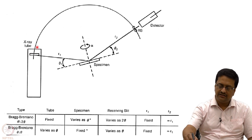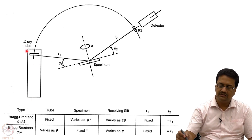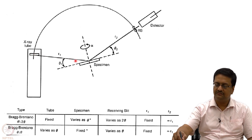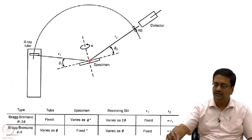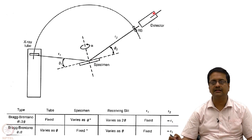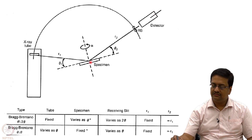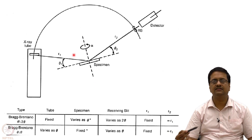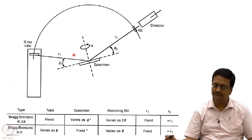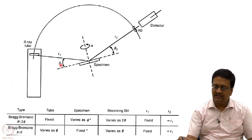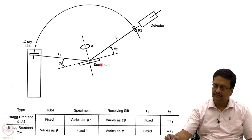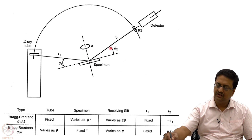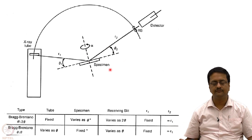This schematic diagram shows the diffraction experiment. The X-ray tube is mounted vertically and the beam comes from left to right, hitting the specimen holder. The specimen can be rotated about its own axis — shown as alpha — and this rotation in front of the beam is done to remove any special orientation effect. The angle of incidence is theta, the angle of diffraction is also theta, and the difference between the direct beam and diffracted beam is 2θ.